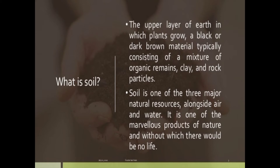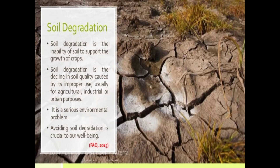First of all, what is soil? Soil is the natural body composed of mineral matter and organic matter in which plants grow. It is the upper layer of the earth — a black or dark brown material typically consisting of a mixture of organic remains, clay, and rock particles. Soil is one of the three major natural resources alongside air and water. It is a marvelous product of nature, without which there would be no life.